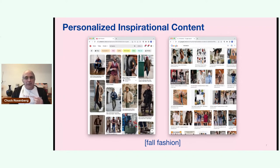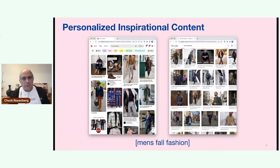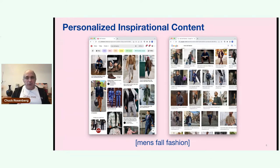What makes content inspirational is often that it's personalized — the system understands me and who I am. For example, a query for fall fashion: on the left, Pinterest results; on the right, a standard search engine. Pinterest knows I identify as male, so it gives me photos of men's fashion. Going more subtle: for 'men's fall fashion,' Pinterest results for me showed dressier, more age-appropriate fashion. Our systems understand that and can personalize inspirational content toward what's more appropriate and inspirational to me.